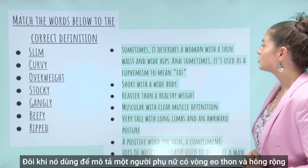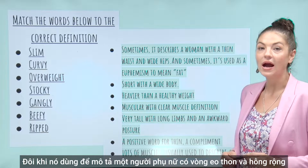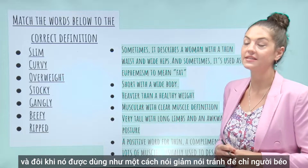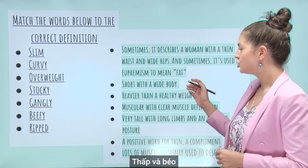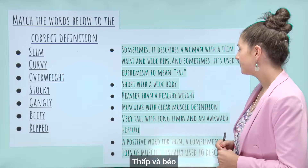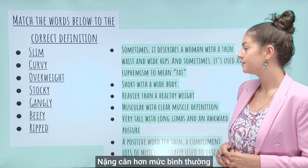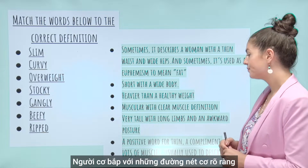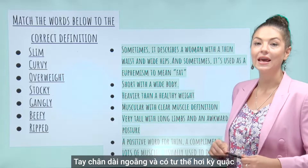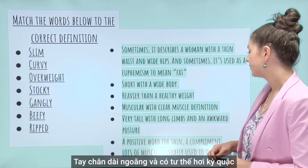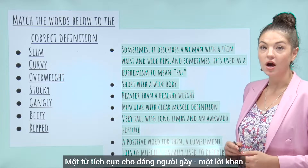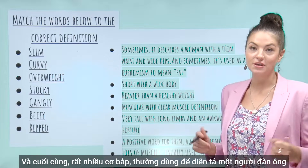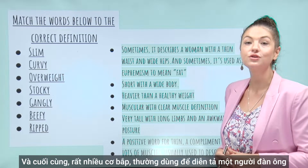Sometimes it describes a woman with a thin waist and wide hips, and sometimes it is used as a euphemism to mean fat. Short with a wide body. Heavier than a healthy weight. Muscular with clear muscle definition. Very tall, with long limbs and an awkward posture. A positive word for thin, a compliment. And finally, lots of muscles, usually used to describe a man.